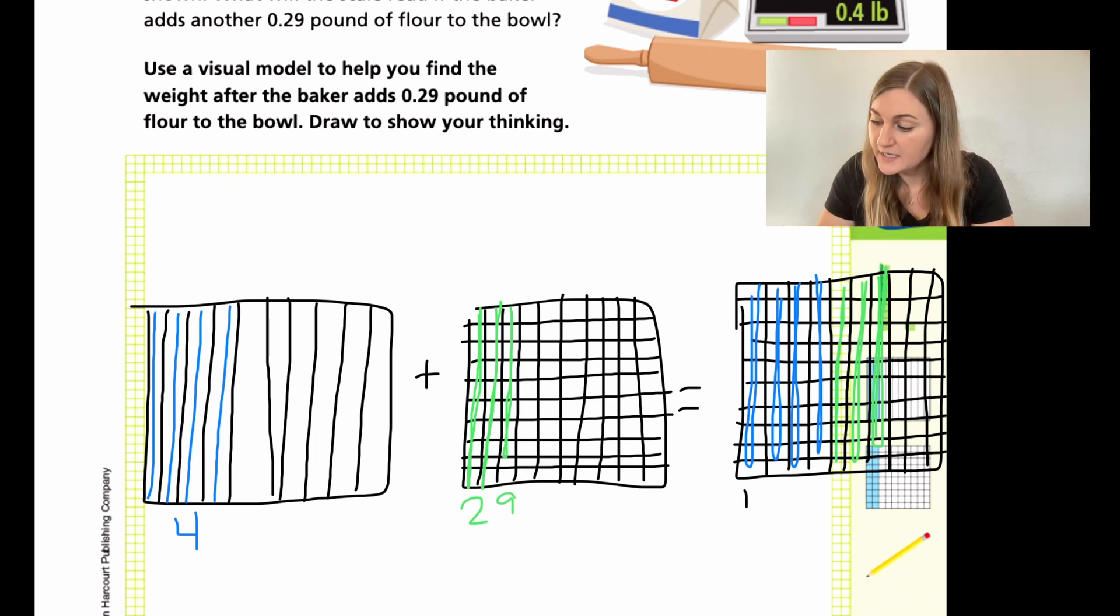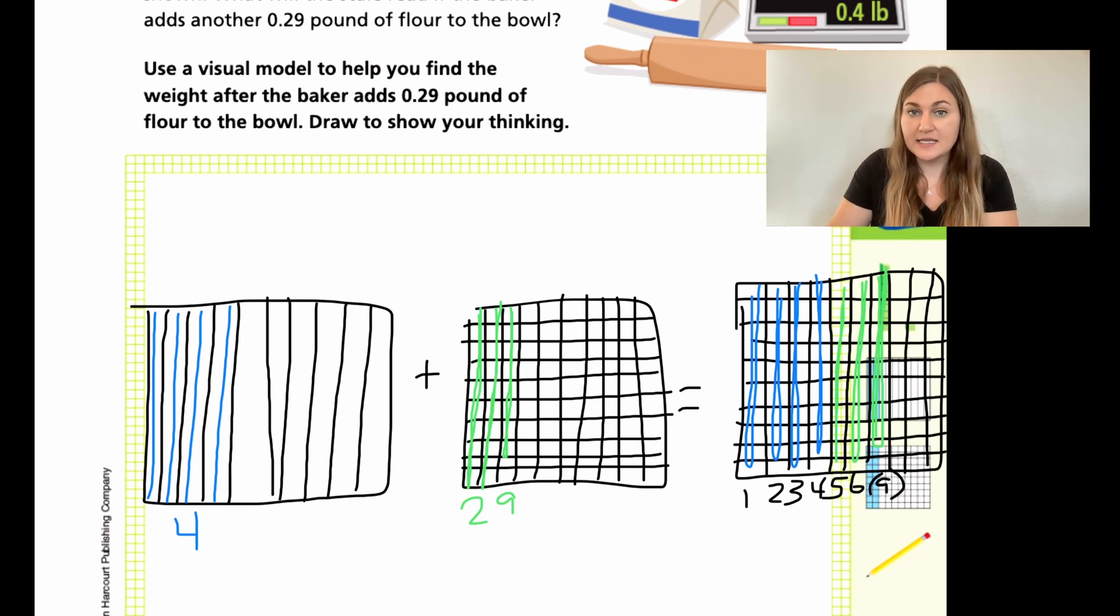But then I need to count what I have. So I have one ten, two ten, three tens, four tens of my blue. Then it's five, six, and then nine tens. So what would six tens be and nine ones be? That would be 0.69 or 69 hundredths because I did color in 69 of the hundred squares that I have.